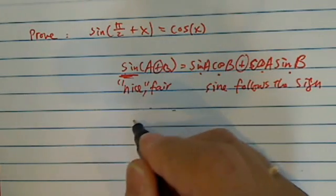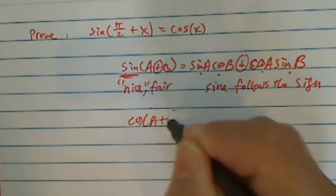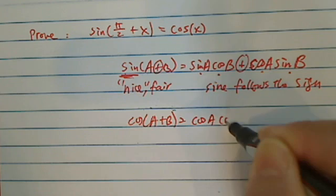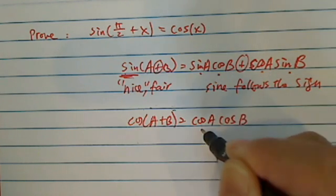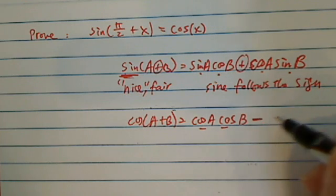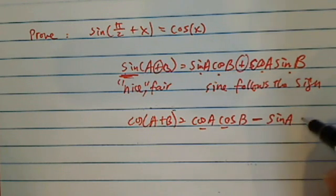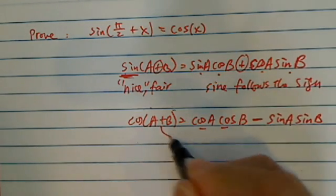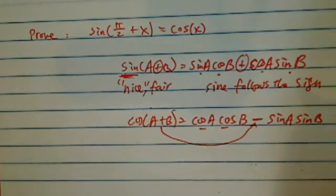Now take a look at what happens on cosine. Cosine of a plus b, cosine is not a fair fellow. So it's very selfish, it stays on its own. And it goes reverse of the sine. So if it's a plus, it actually goes a minus.